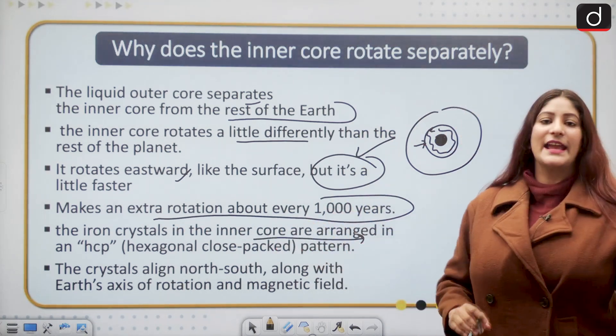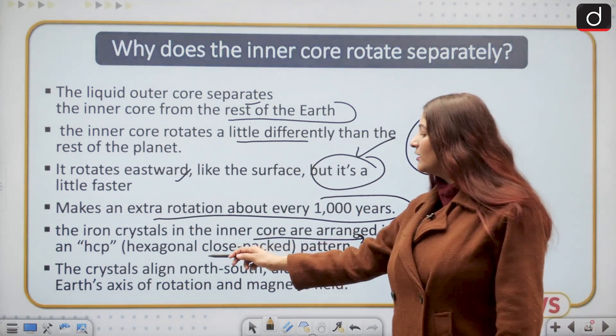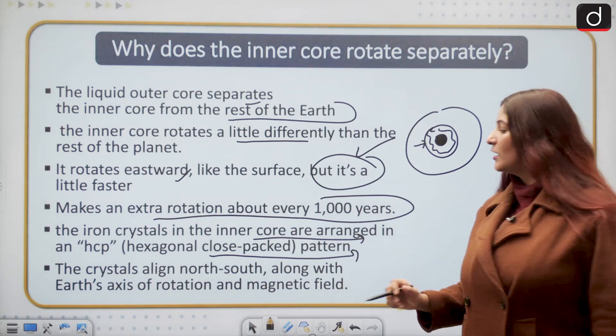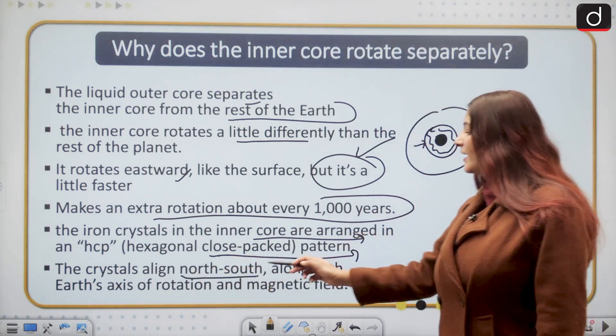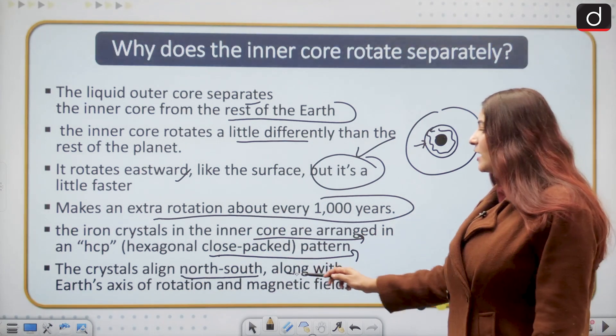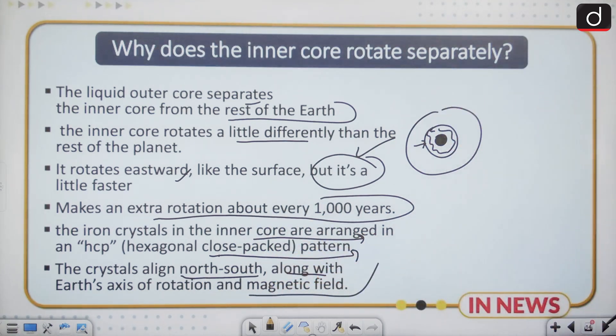And the iron crystals in the inner core are arranged in the HCP, that is hexagonal close packed pattern. Because of this hexagonal close packed pattern they are aligned in north-south manner, along the earth's axis of rotation and magnetic field.